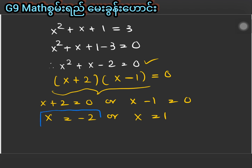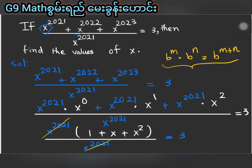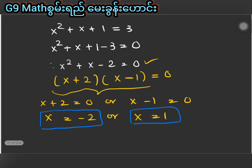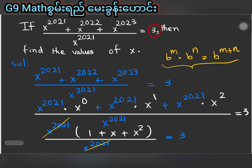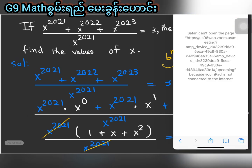Now we check: for x equals one, substituting back into the original equation gives 1 plus 1 plus 1 equals 3, which is correct. So x equals one is a valid solution. We verify both solutions against the original equation.